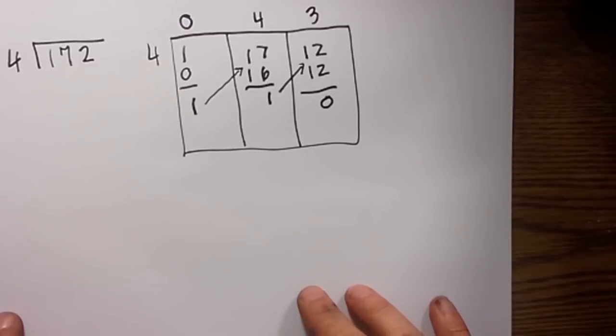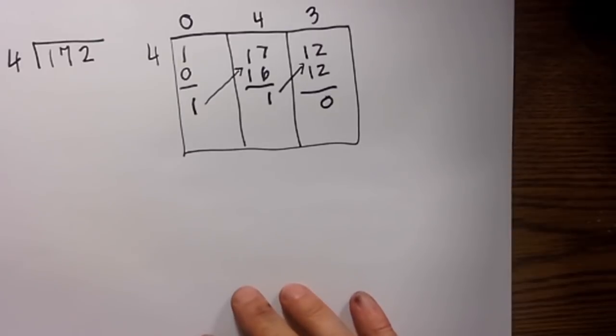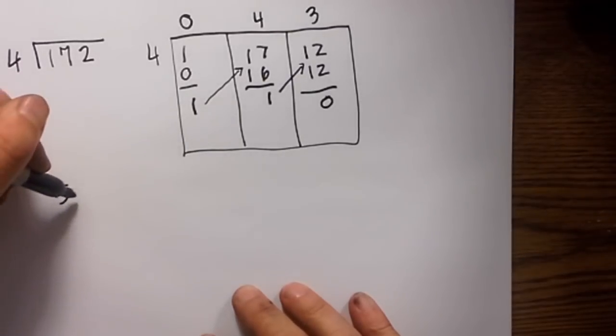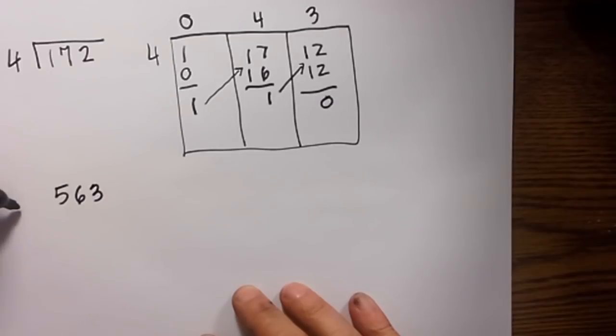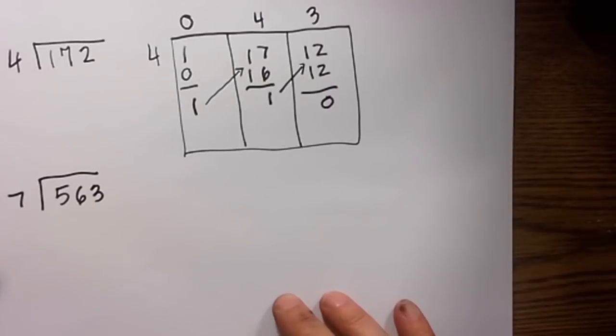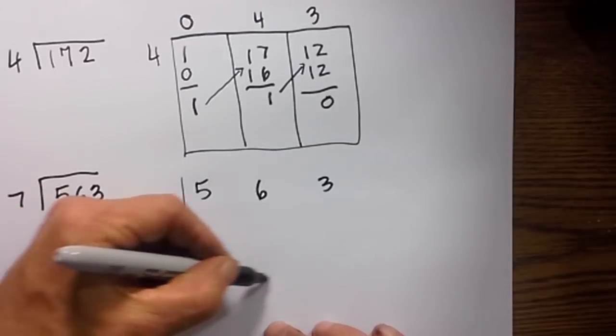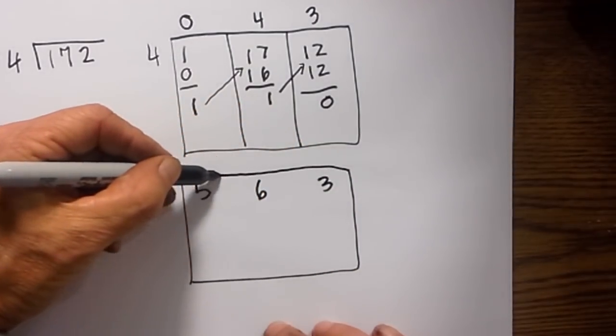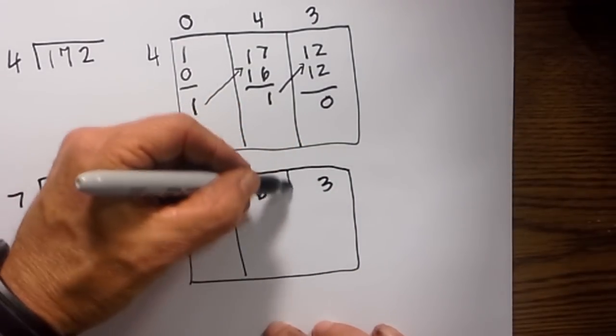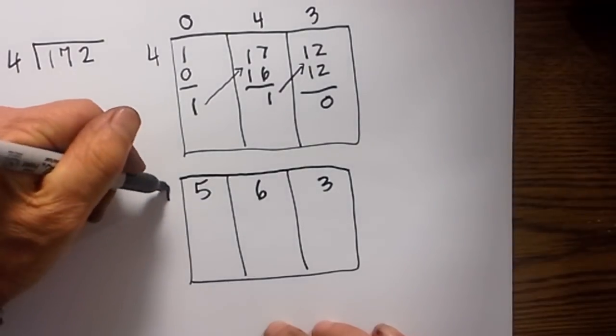Pretty simple straightforward way to do this. Let's get one that's slightly more complicated because we'll end up with a remainder and I'll tell you how we can handle that. Let's go 563 divided by 7. We spread the numbers out and draw a little box around it. Again, it just keeps everything neat and organized, and let's place a seven on the outside.